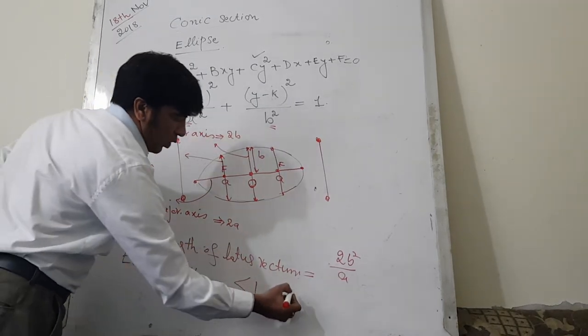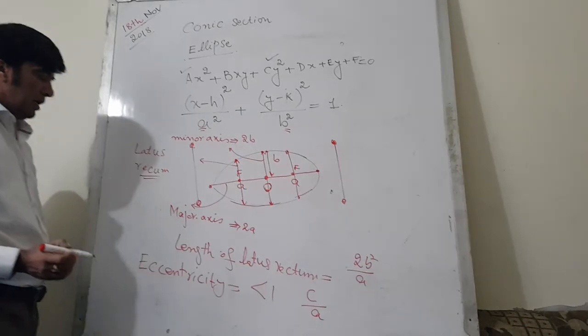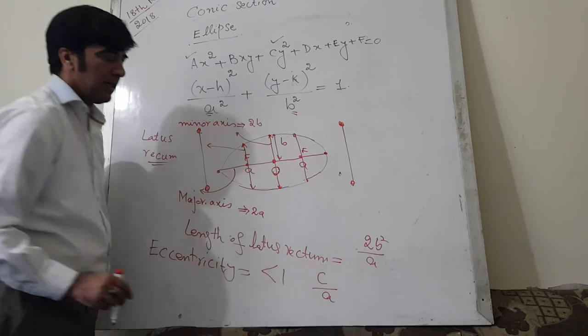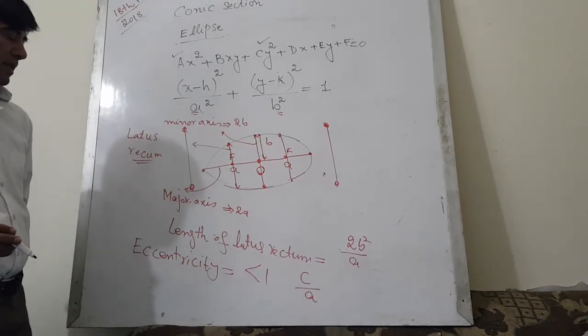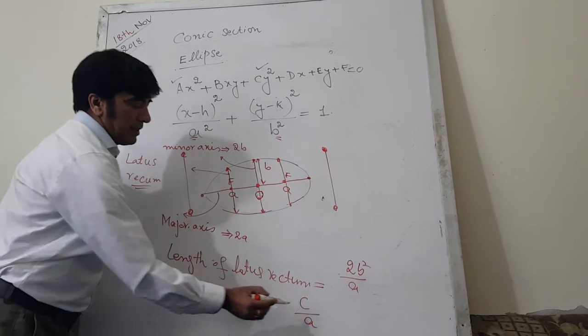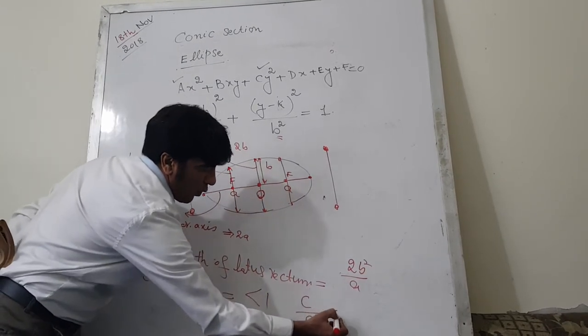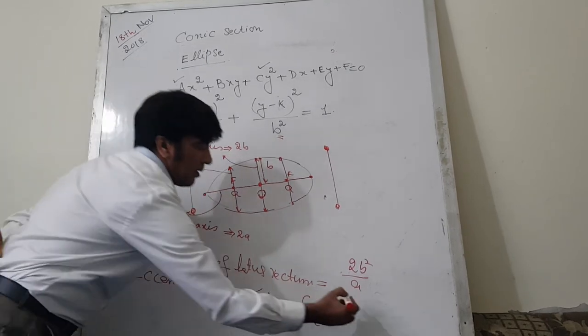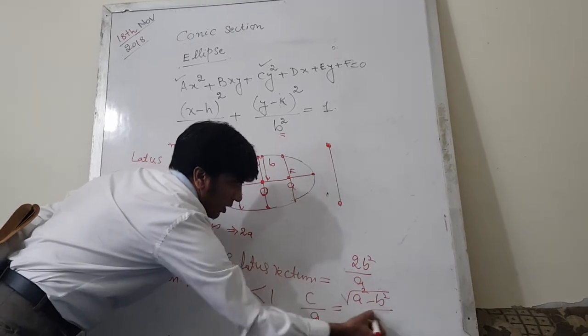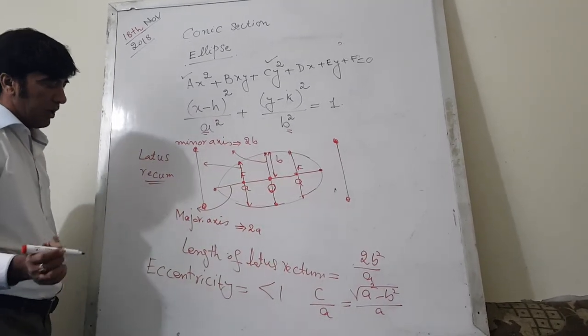And as I told you in previous case, in case of parabola eccentricity is 1, but for ellipse the eccentricity is less than 1, meaning the value of c is less than a. And the value of c can be calculated by this formula: √(a² - b²)/a.